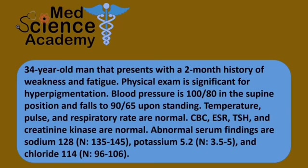Abnormal serum findings are sodium of 128, potassium of 5.2 and chloride of 114. If you want to find out the diagnosis and how we got to it, stick around to the end of this video.